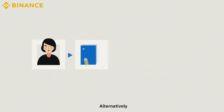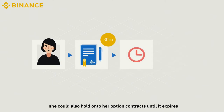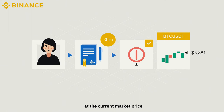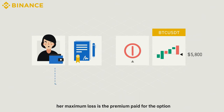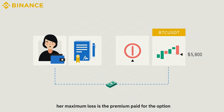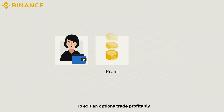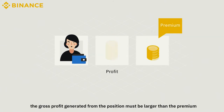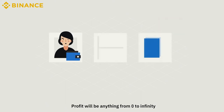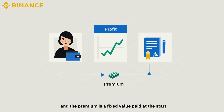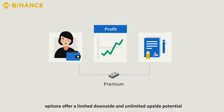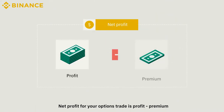Alternatively, she could hold on to her option contracts until it expires, where the contract will be settled automatically at the current market price. Conversely, as the price of Bitcoin reverses against her position, her maximum loss is the premium paid for the option. To exit an options trade profitably, the gross profit must be larger than the premium. Profit ranges from zero to infinity, while the premium is a fixed value — thus options offer a limited downside and unlimited upside potential. Net profit equals profit minus premium.